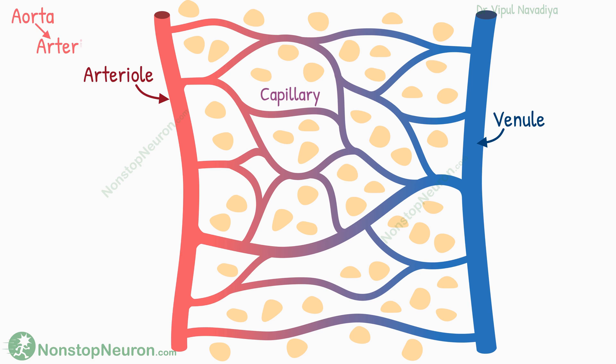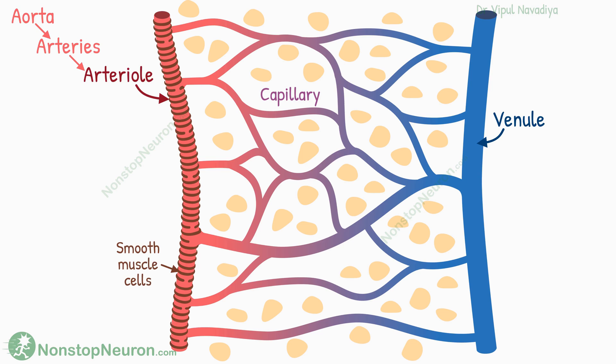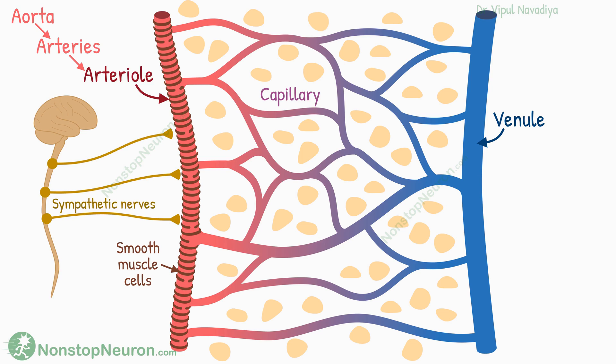Talking about the arteriole, they originate by branching of arteries. Their wall contains a single continuous layer of smooth muscle cells. These smooth muscles receive innervation, mainly by the sympathetic system. So the tone of arterioles is mainly under nervous control.